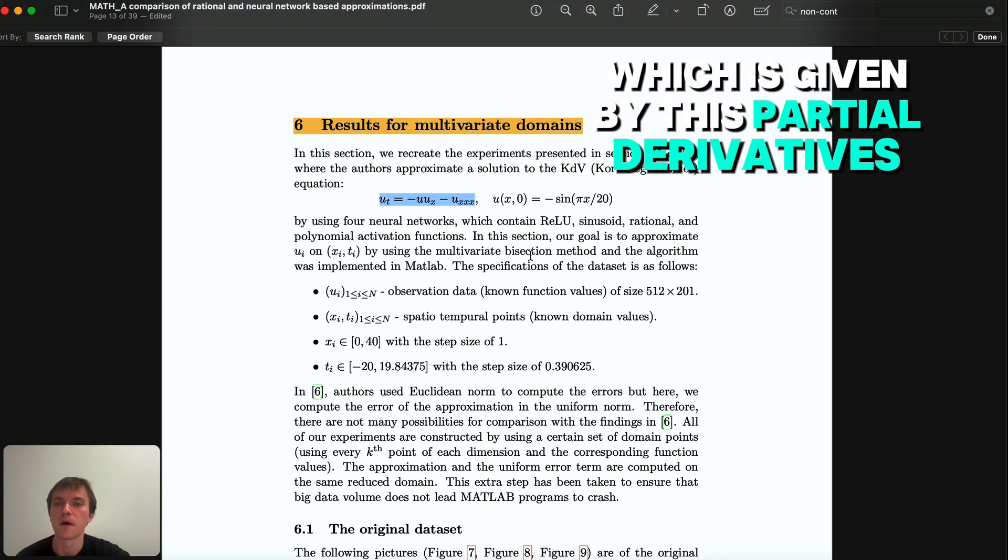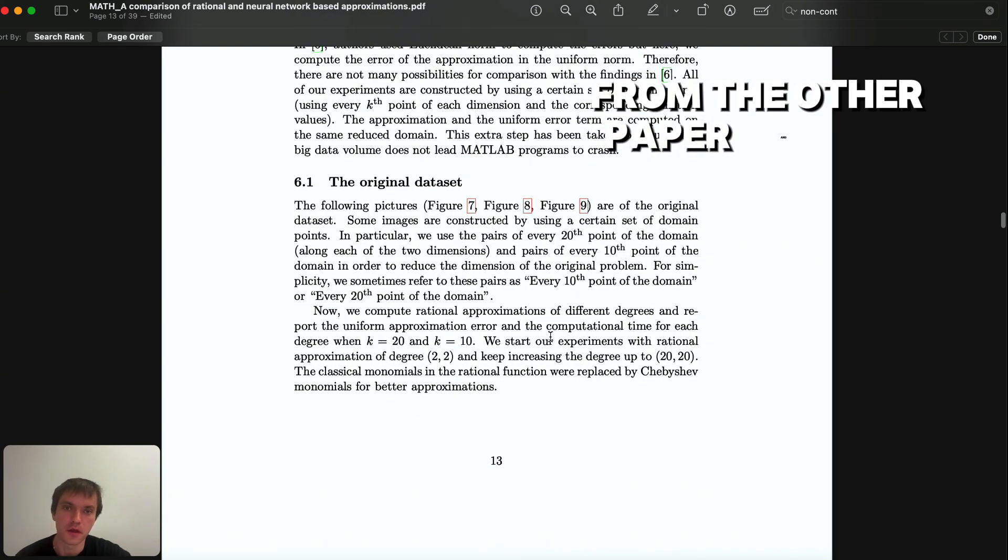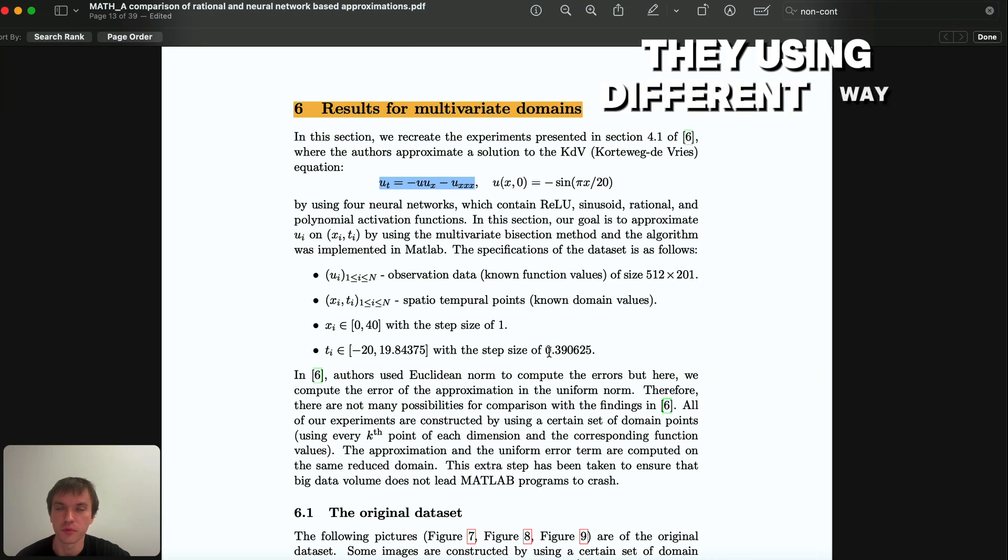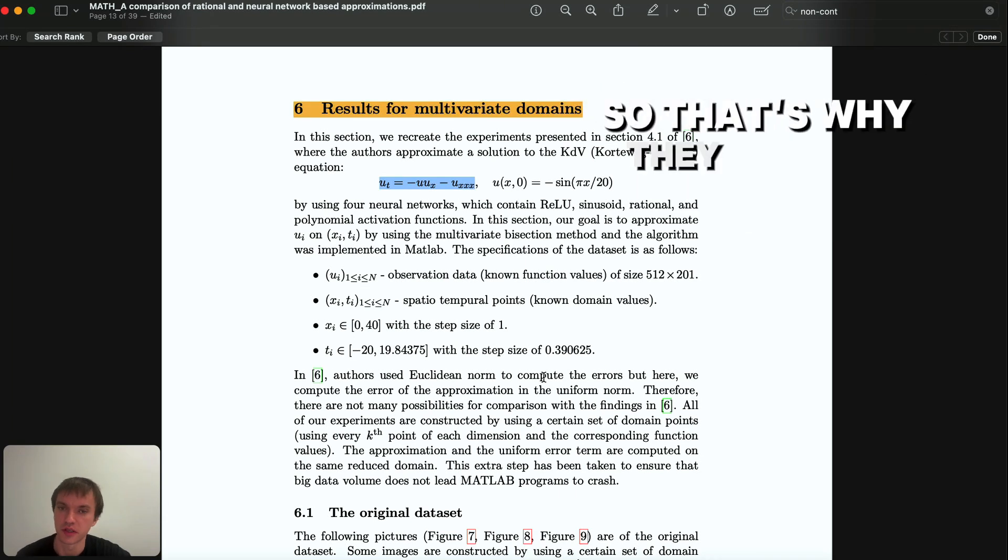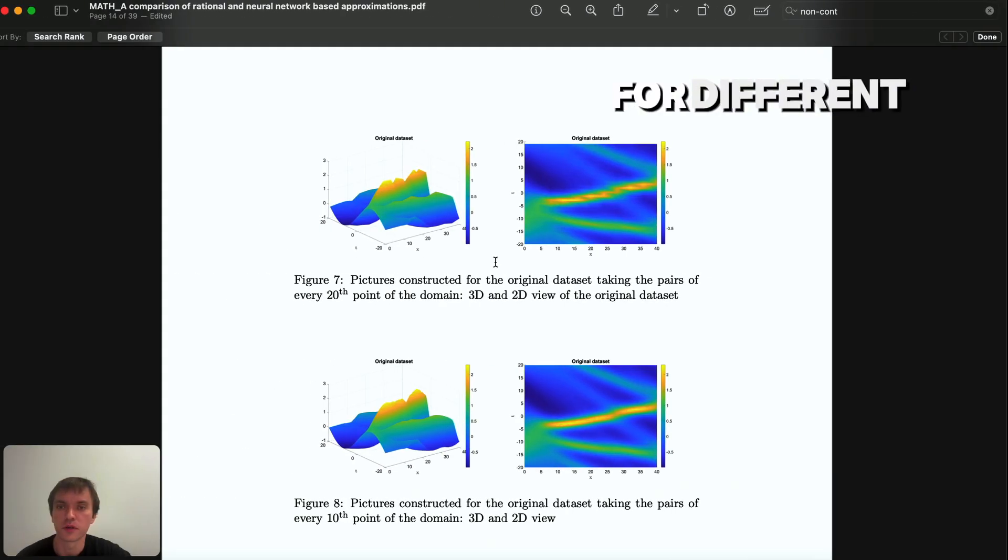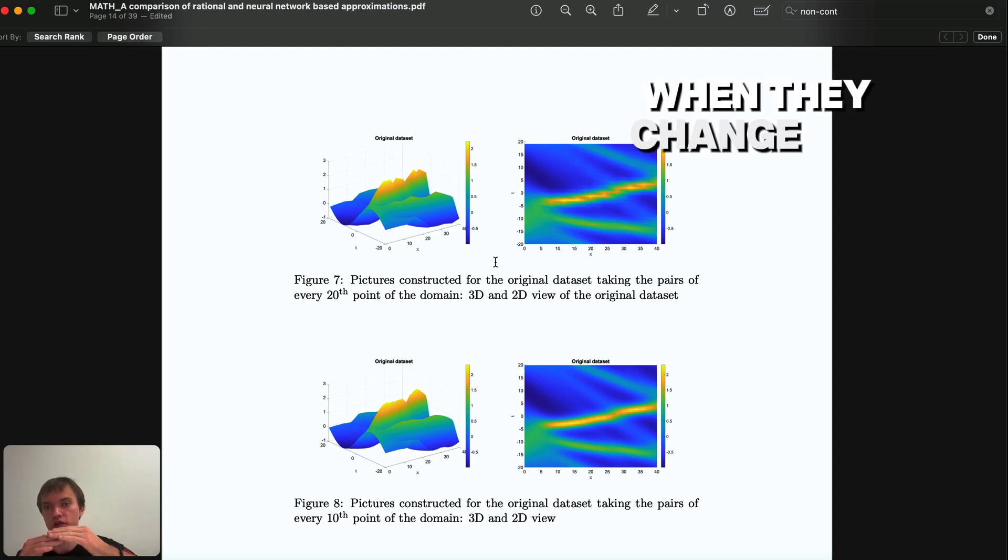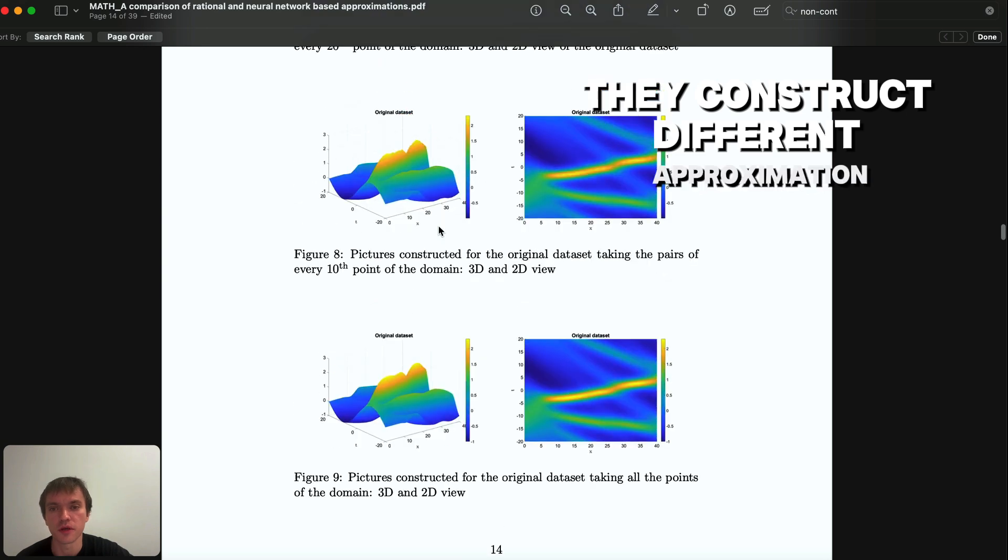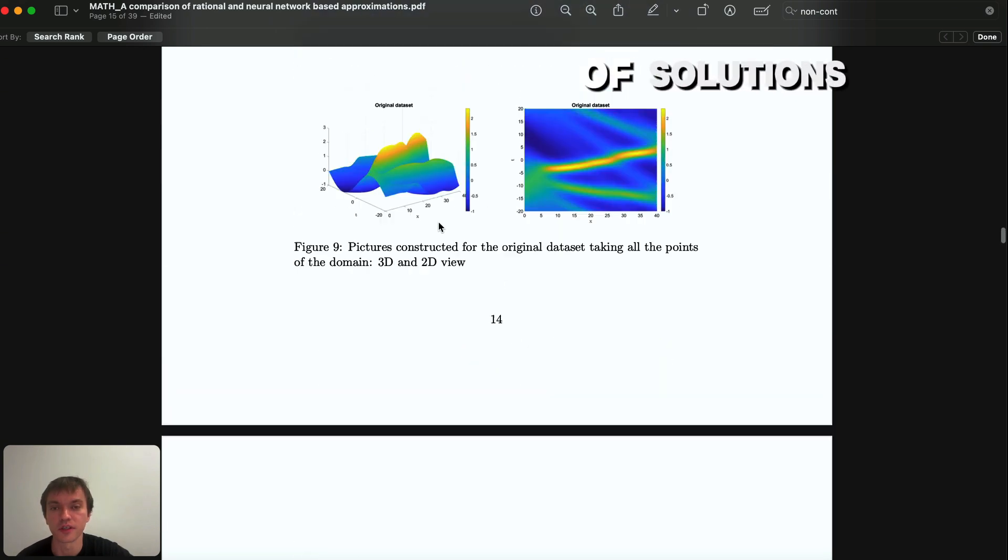In this case they're using a different way how they measure the error, so they cannot give a direct comparison with that paper in terms of errors for different architectures. When they change the hidden layer of the neural network, they construct different approximations.